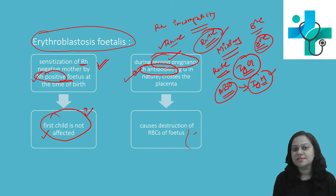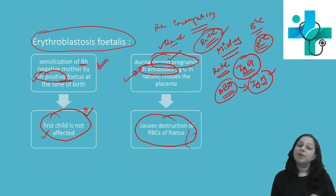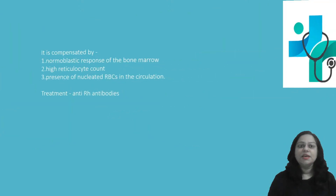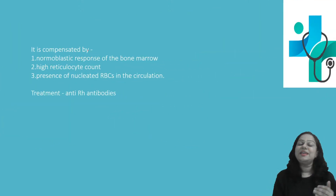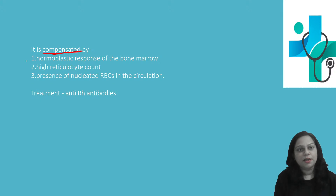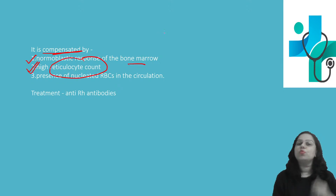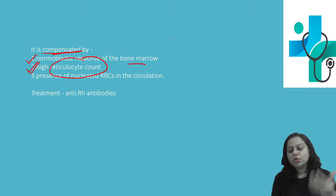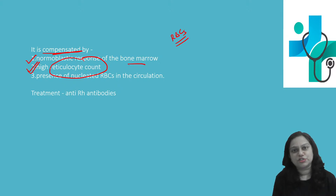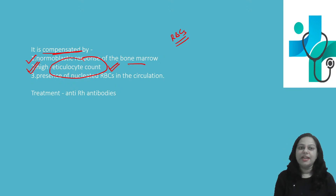So during the second pregnancy, IgG antibodies will cause destruction of the red blood cells of the fetus. After birth, when there is excessive hemolysis, this will be compensated by a normoblastic response of the bone marrow. The bone marrow will try to compensate for the excess destruction of red blood cells by releasing more red blood cells into the circulation, causing a high reticulocyte count and presence of nucleated red blood cells in the circulation.